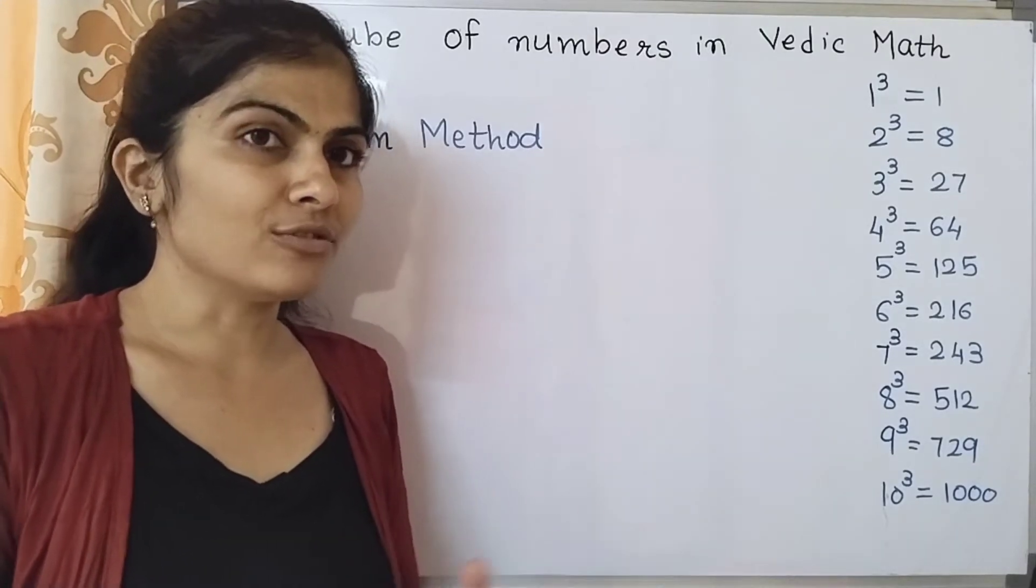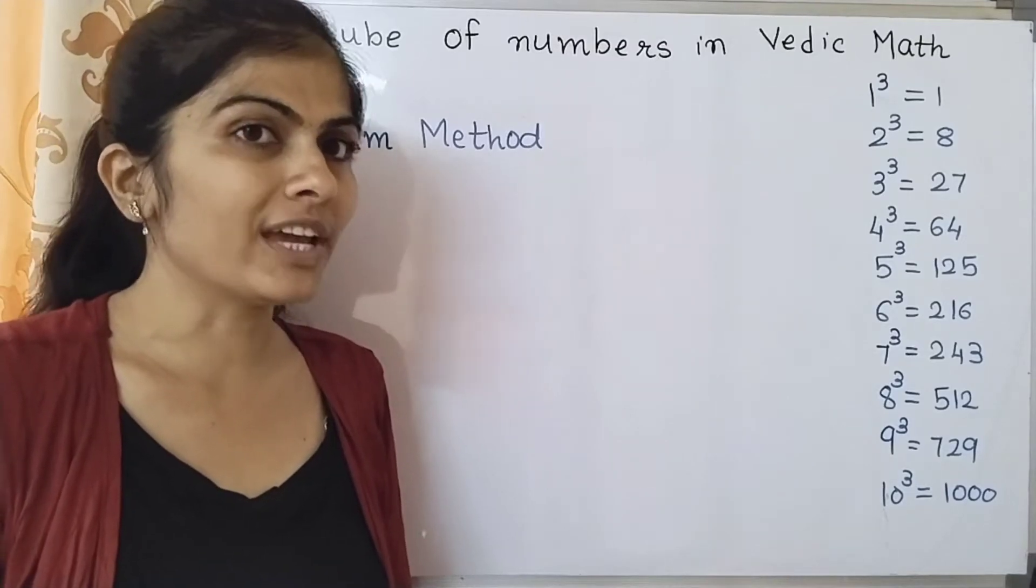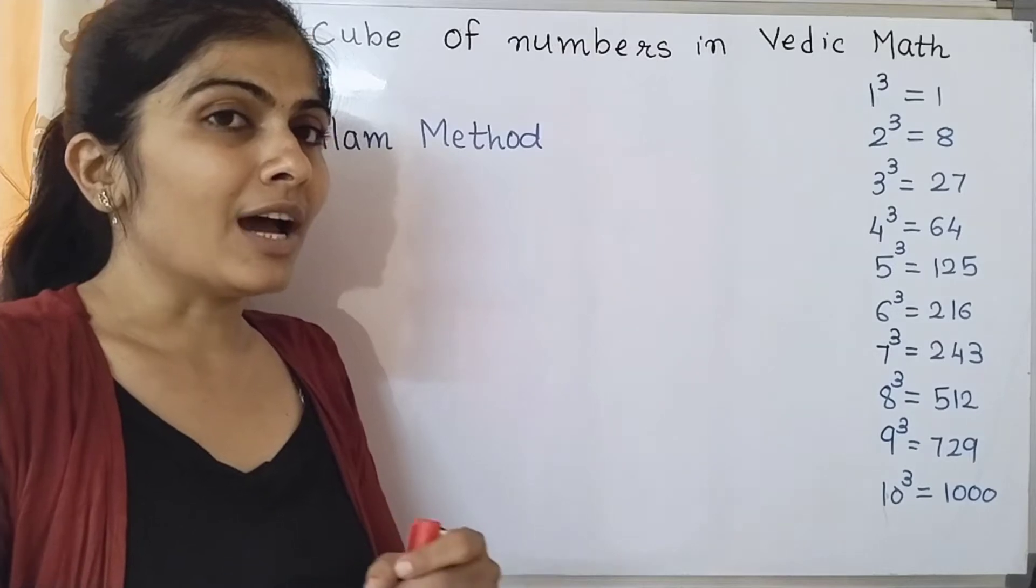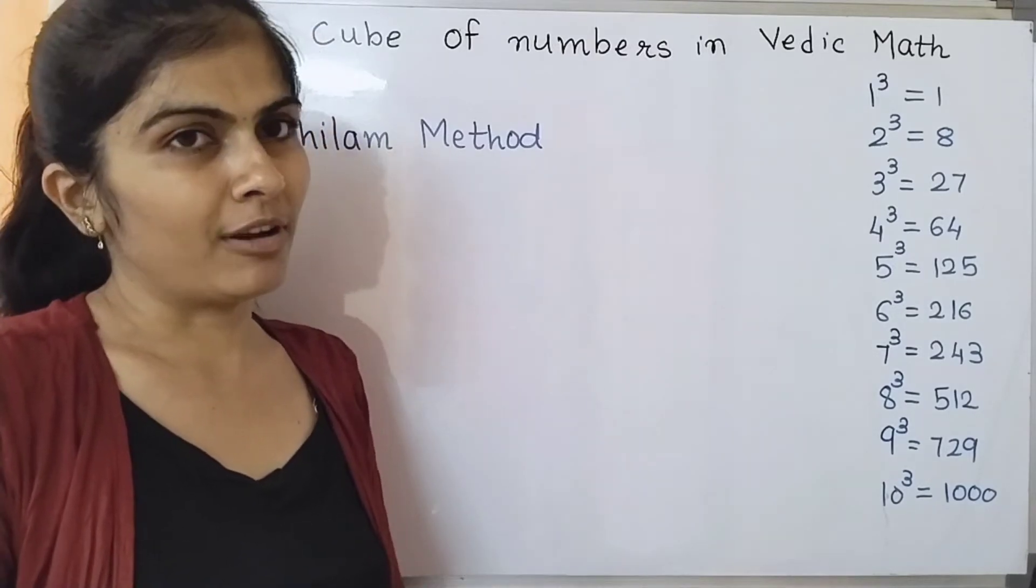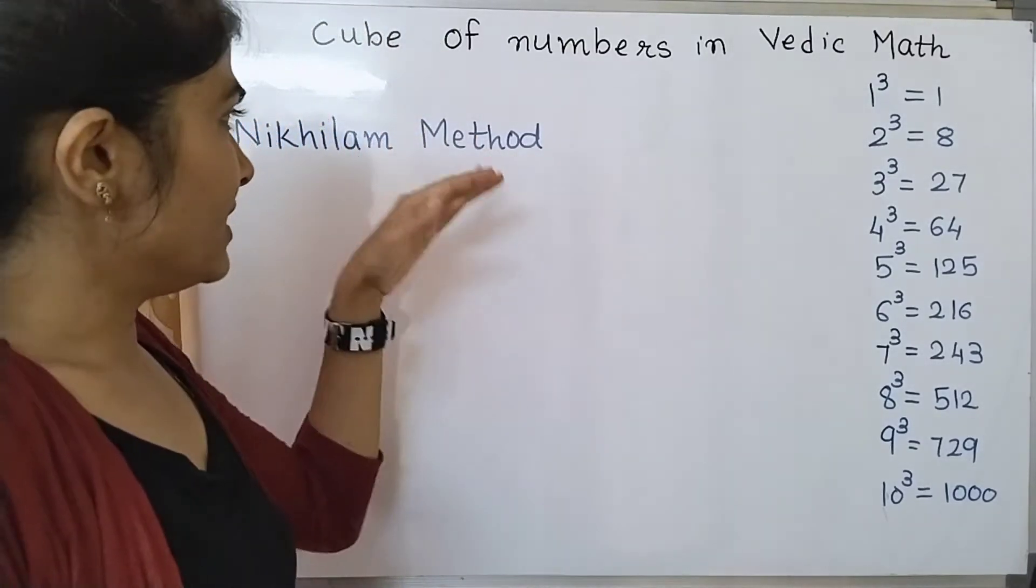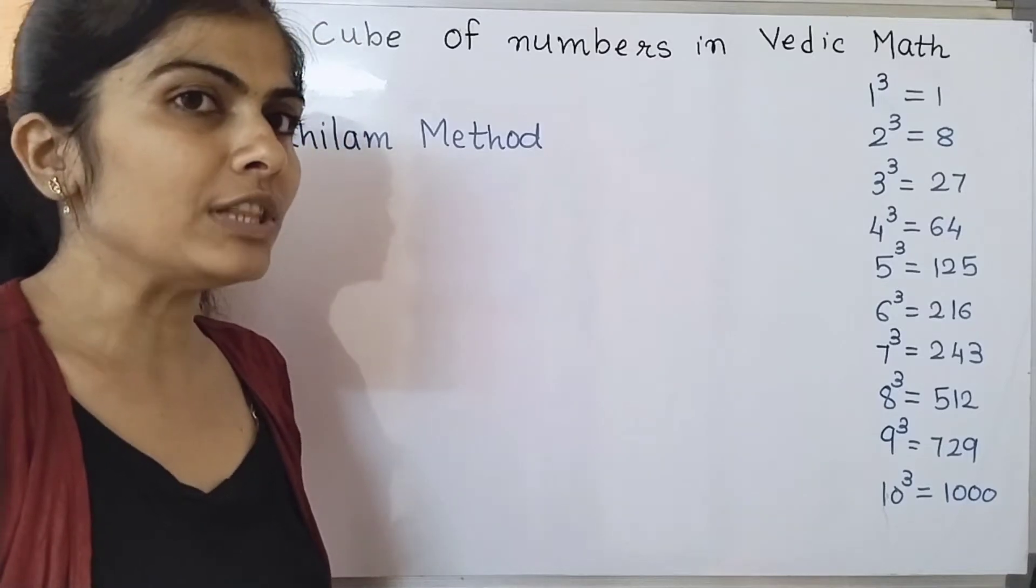If you recall the first method which is the Yavdanam method, in that method there were certain limitations like you can find out cube of the numbers only if they are closer to multiple of 10, that is 10, 100, 1000 and so on.